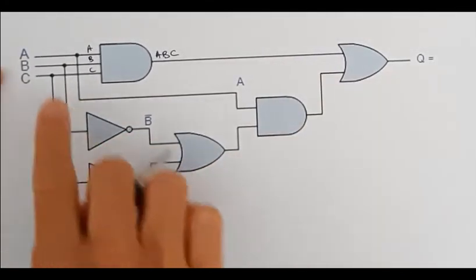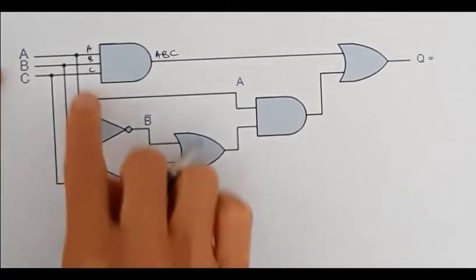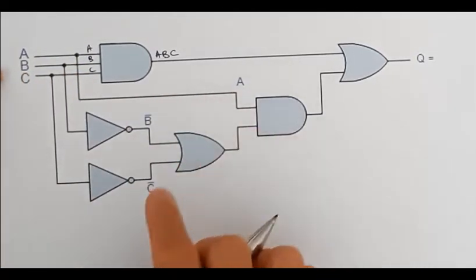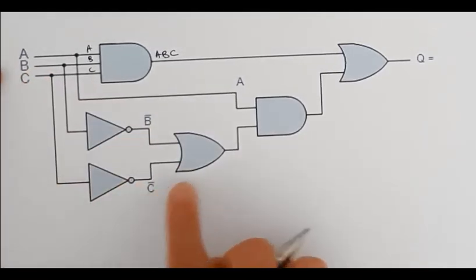Here I've got a NOT gate which is attached to my B so I've got a NOT B that's already filled in. This you can see I've got an A coming out here. Here I've got my C going into a NOT gate so I've got NOT C.